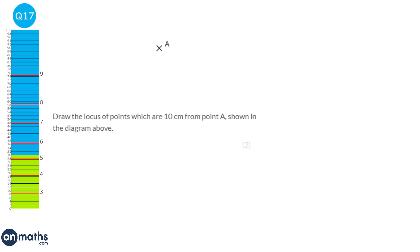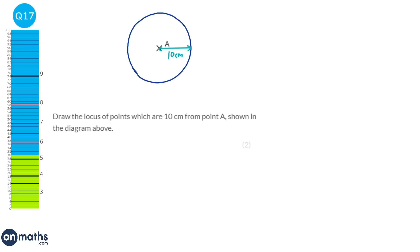To find the locus of points that are 10cm away from a point, measure 10cm on a pair of compasses, put the point at A and draw a circle. The radius needs to be exactly 10cm for full marks. Try to get the circle as neat as possible — don't push down too much and move the page around while keeping the compass stationary.